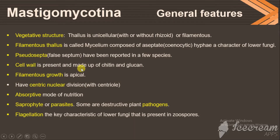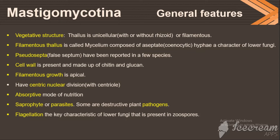The cell wall is made of chitin and glucan. Filamentous mycelium has apical growth, and they have centric nuclear division. Centric nuclear division means their nuclear division involves centrioles, which are not found in other groups of fungi — those use spindle pole bodies (SPB). Their mode of nutrition is absorptive; they are saprophytes and parasites, and are also destructive plant pathogens.